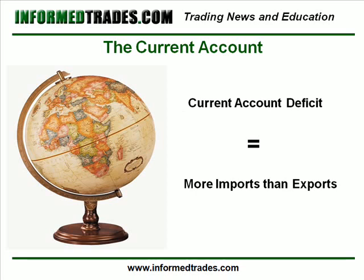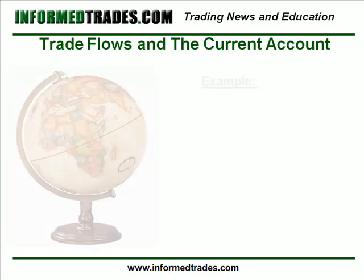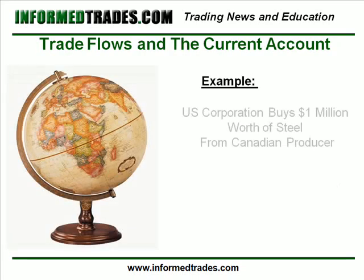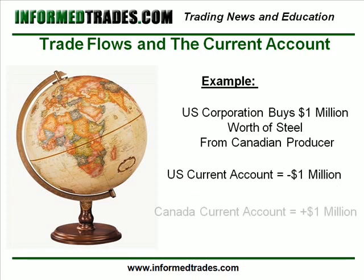If you remember from our lesson on trade flows, I gave the example of a US company needing to import one million dollars worth of steel from a Canadian steel producer. Just to give a simple example, let's say for a second that this was the only transaction that both the United States and Canada did with foreign countries. If this were the case, then the United States would have a current account deficit of one million dollars and Canada would have a current account surplus of one million dollars.